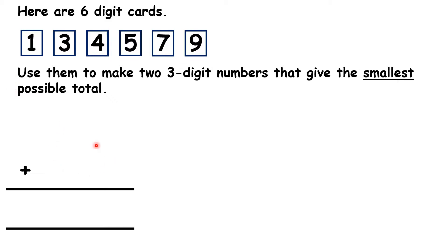So we need to make two numbers, and we need to arrange the digits so that when you add those numbers, you get the smallest possible total. Pause the video and think about how you might solve this question.